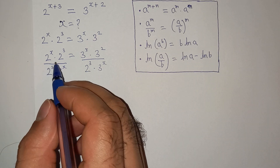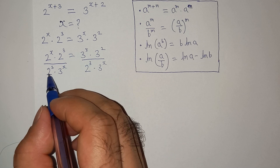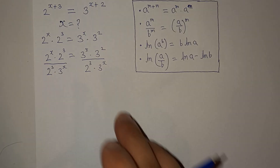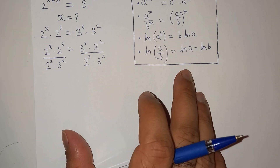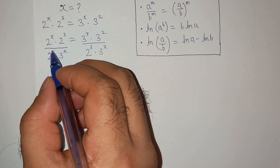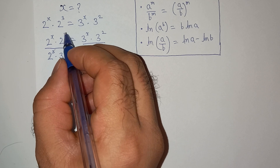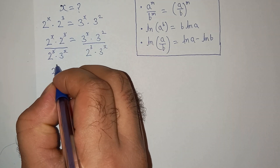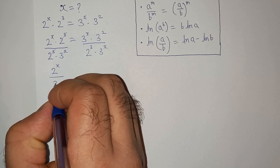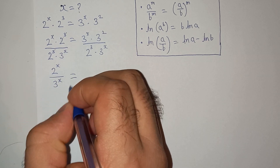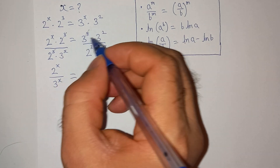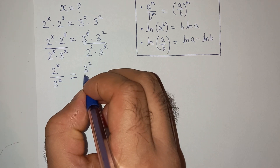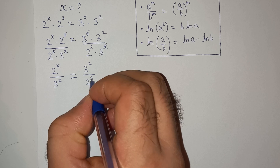Basically, I have divided both left hand side and right hand side by 2 cubed multiplied by 3 power x. After cancelling, on the left hand side we have 2 power x divided by 3 power x.